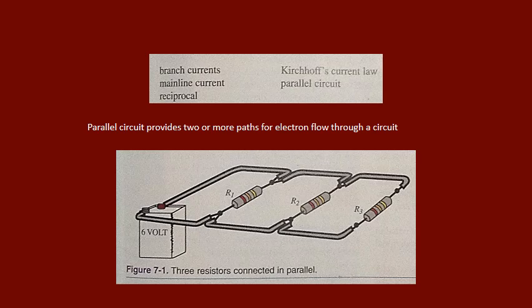Section 7.1 Parallel Circuit Principles. In simple terms, a parallel circuit provides two or more paths for electron flow through each circuit. Note how each of the three resistors are connected to the source with each electron flow path independent of the other. When three resistors are connected in series and one resistor is removed, the entire circuit appears to be dead and electrons cease to flow — there is no complete path for current.